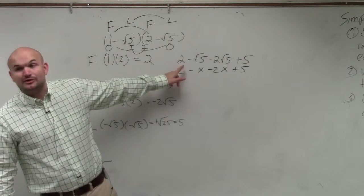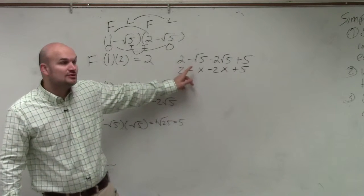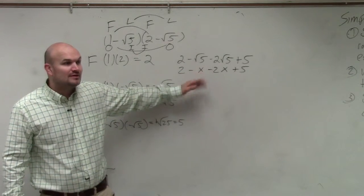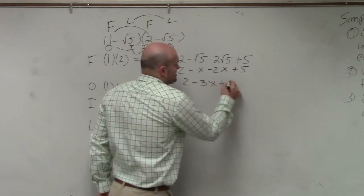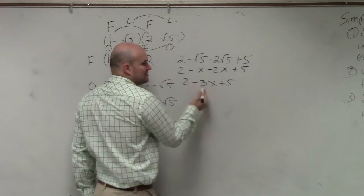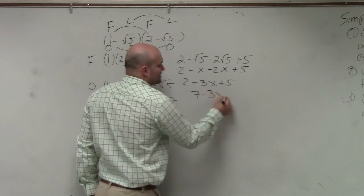If you owe me $1 and you borrow two more dollars, how much do you owe me? You owe me $3, right? So this would be 2 minus 3x plus 5. You can combine the 2 and the 5, so it's 7 minus 3x.